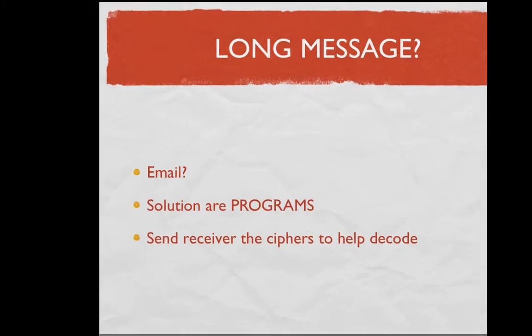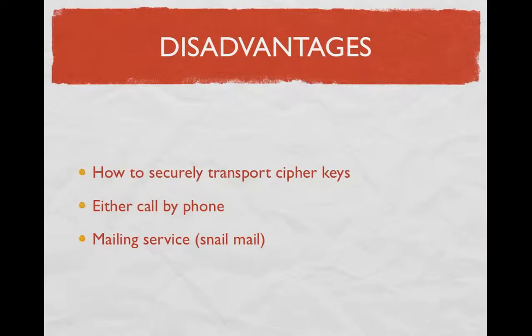The disadvantages to any type of encrypted message being sent is how to transport the cipher keys without those being intercepted by third-party hackers. Two of the most known ways of doing this somewhat successfully is calling the receiver by phone and letting them know that you'll send it to them in a password-protected document, or snail mail it to them through the postal service so they actually receive it physically. But this is the most fundamental way of encrypting a message, and it is by far more secure than any other dumbed-down encryption method because of its convenience and speed of decryption once you receive it.